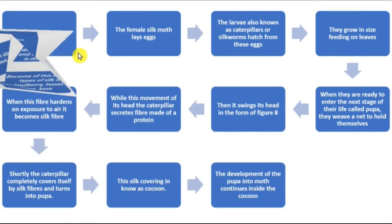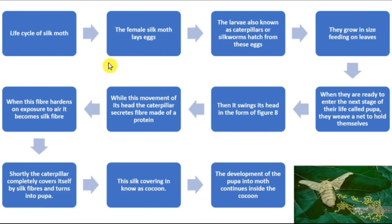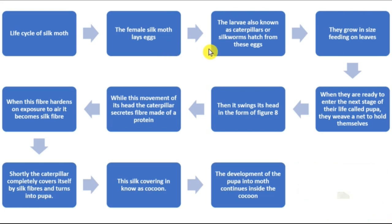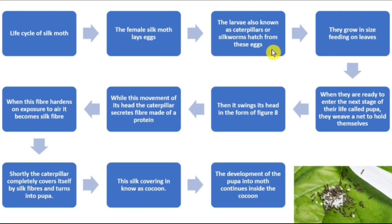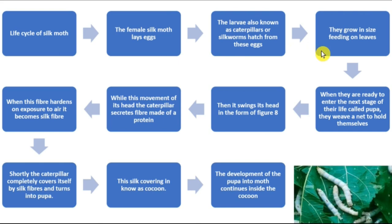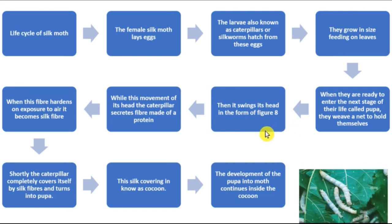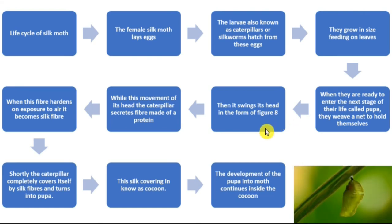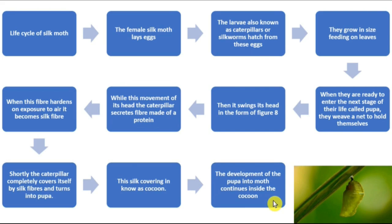Now the life cycle of the silk moth. First, the female silk moth lays eggs. Then larvae, also known as caterpillars or silkworms, hatch from these eggs and grow in size while feeding on leaves. When ready to enter the next stage — pupae — they weave a net to hold themselves. The caterpillar swings its head in a figure-eight motion, secreting fiber made of a protein. When this fiber hardens on exposure to air it becomes silk fiber, and the caterpillar completely covers itself, turning into a pupa. This silk covering is known as a cocoon, inside which the development into a moth continues.